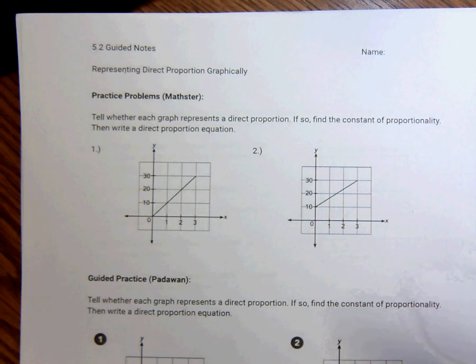And this is all about graphing proportional relationships. Last time we learned what a proportional relationship was, what the table looks like, what the equation looks like. Now we're just looking at what the graph looks like.